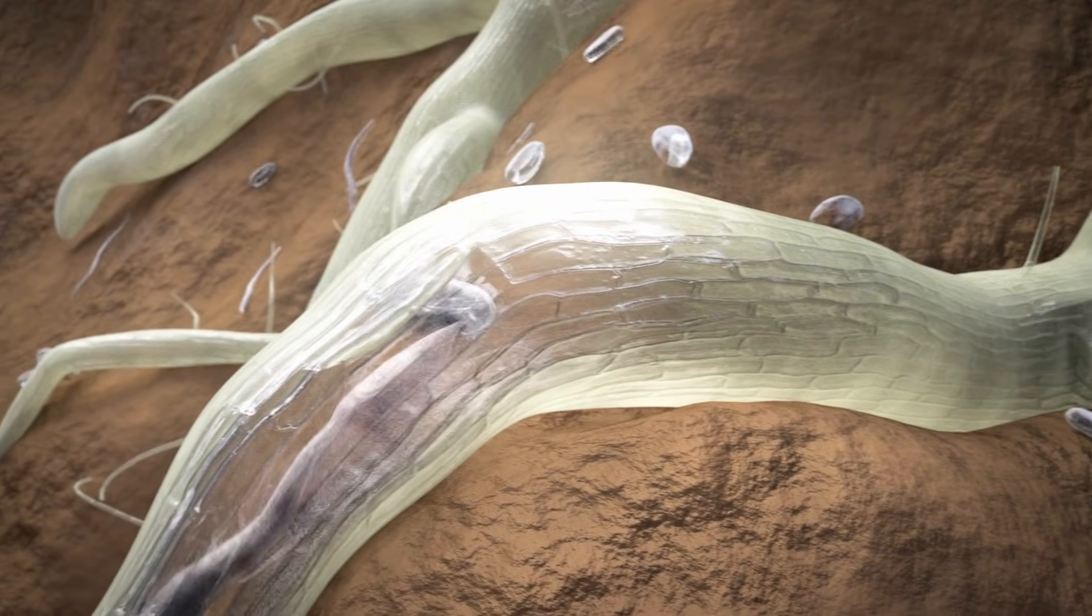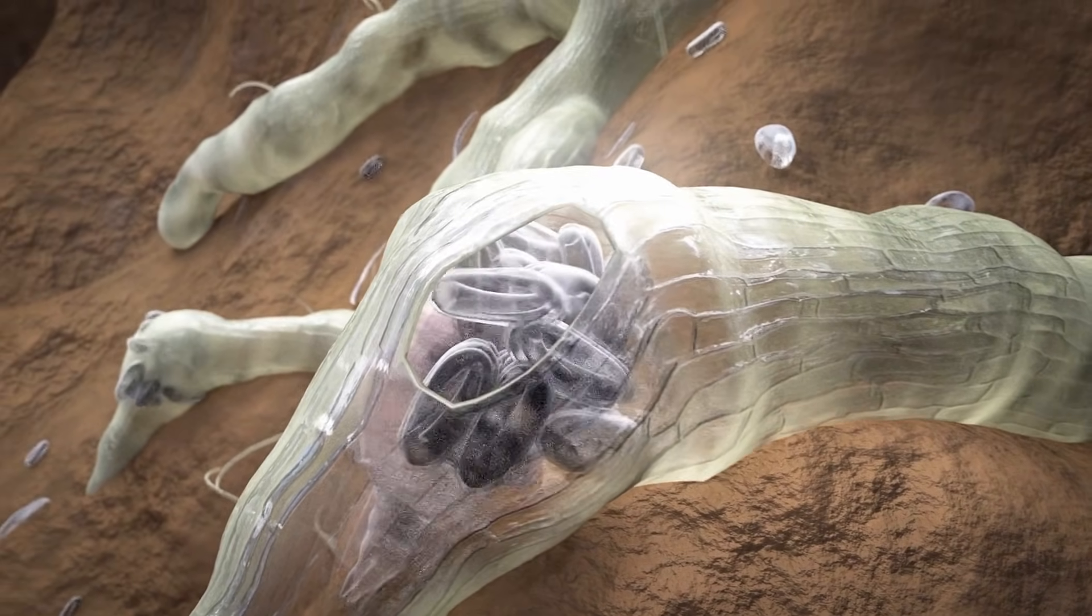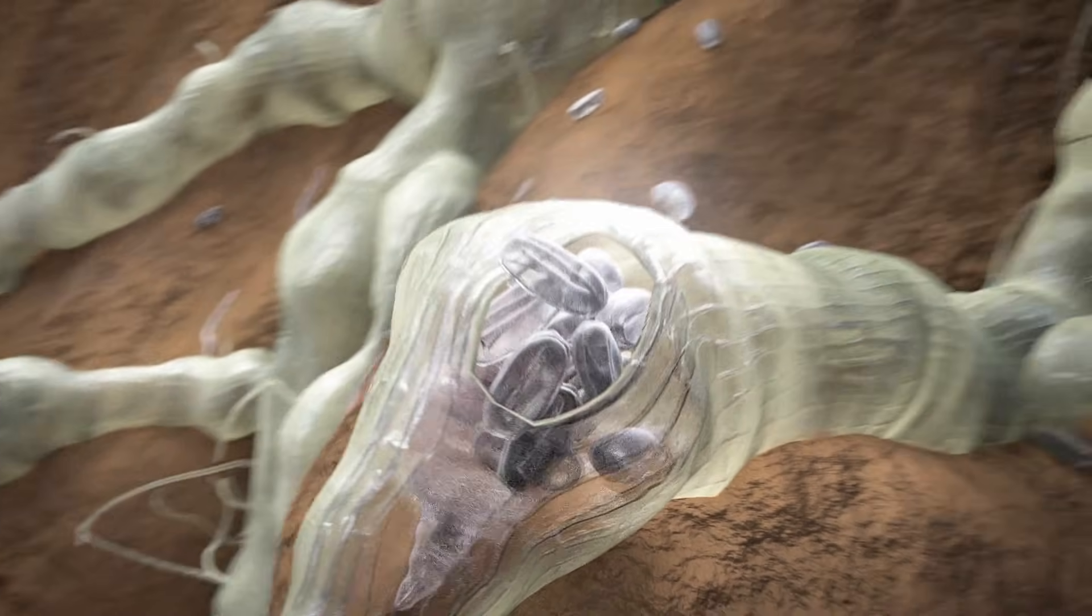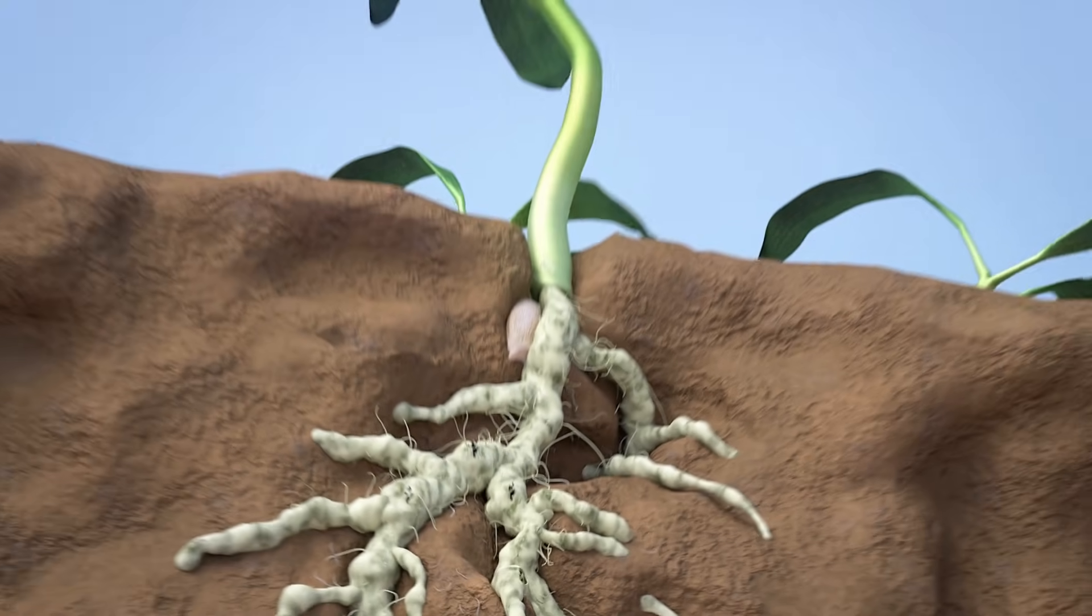Nematodes penetrate the root, start to reproduce and cause root galling. They suck water and nutrients from the root system. Infested plants suffer and show poor growth.